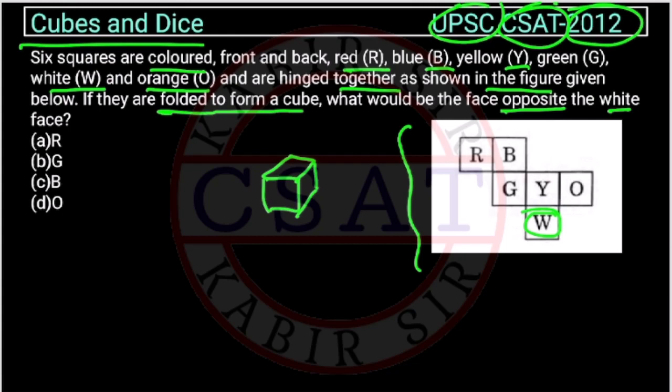So one way to solve this question is you imagine, suppose you are making this G, this part as the base, and you are folding all these things here.